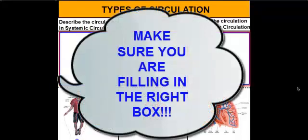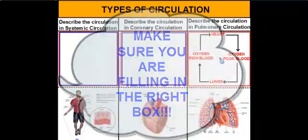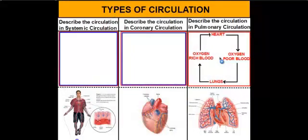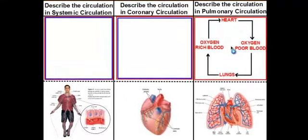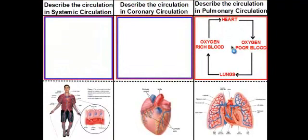The first pathway that we'll discuss is the pulmonary circulation pathway. The pulmonary circulation pathway can be easy to remember if you know that the word pulmonary means lungs. So the heart is going to send blood to the lungs. The oxygen-poor blood that our body returns back to the heart needs to pick up more oxygen, and the organ that has all the oxygen are the lungs.